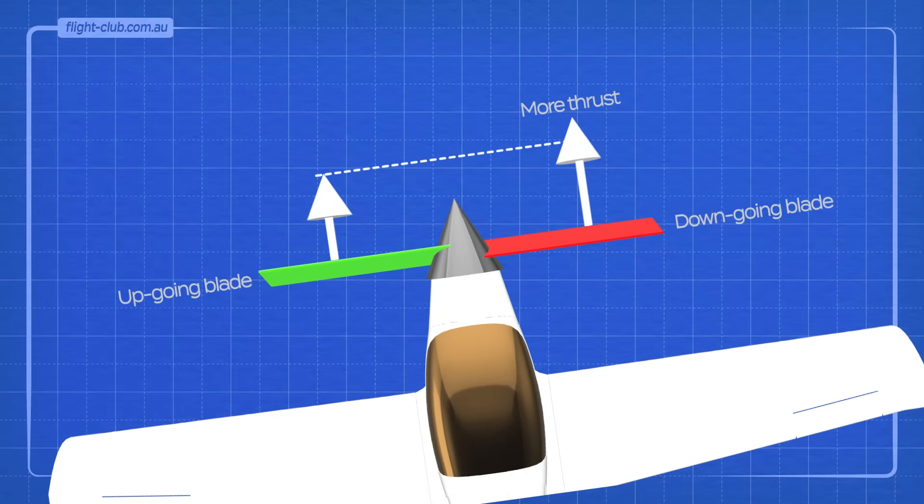This effect is known as the p-factor, or the asymmetric blade effect.